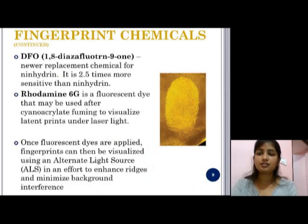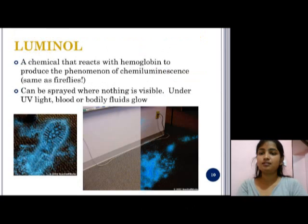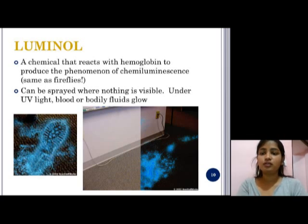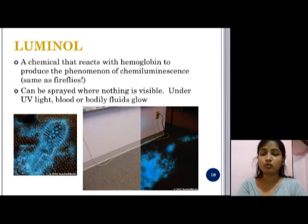These are the chemicals involved in chemical detection. The next method is the Luminol method. Luminol is a chemical that reacts with hemoglobin to produce chemiluminescence. It can be sprayed in areas where nothing is visible, and blood or bloodstained fluids will glow under UV light.